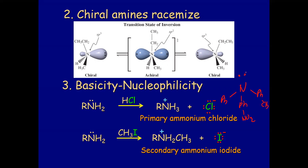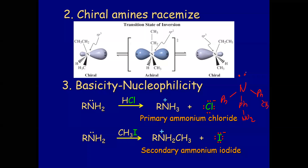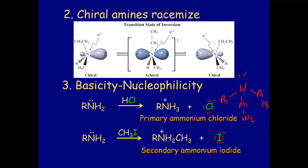You can also have amines in some sort of cyclic compound where inversion may also be locked in place. Regarding basicity: amines are basic. They have a lone pair of electrons which can be easily donated. In fact, amines are much better nucleophiles than alcohols — both have lone pairs, but the lone pair in amines is highly available because oxygen is pulling electrons closer to itself.